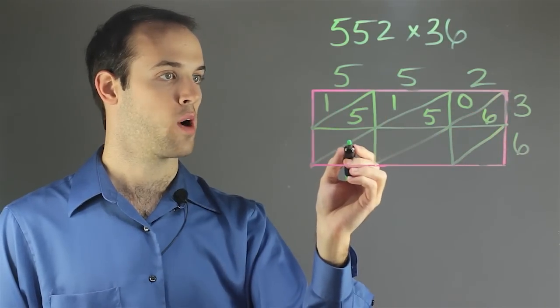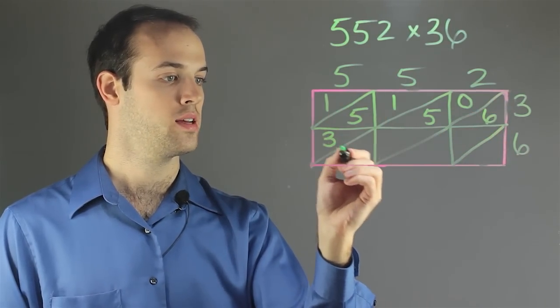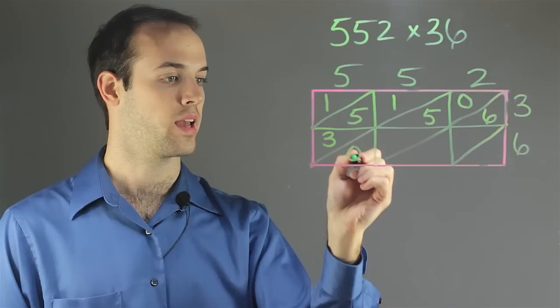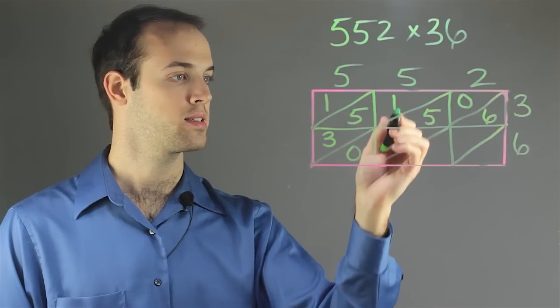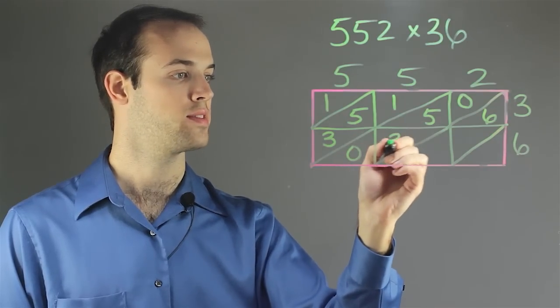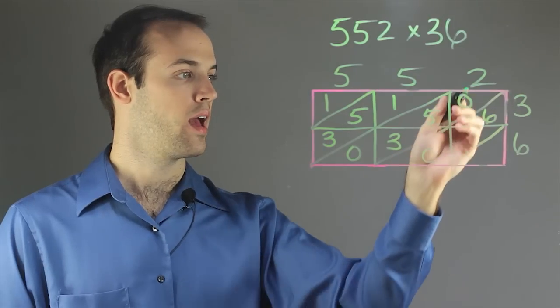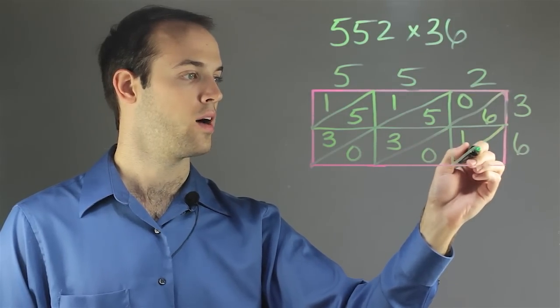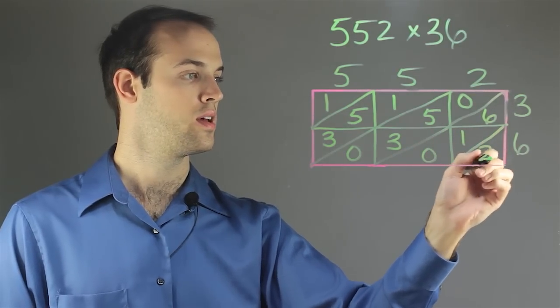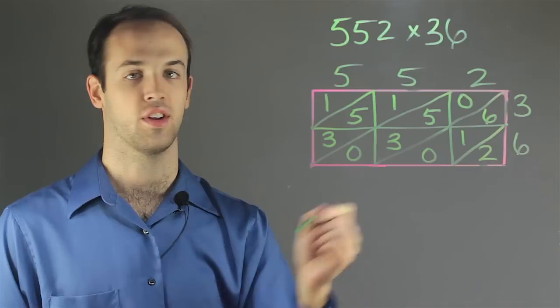Now for this row I'm going to do 5 times 6, which is 30 — a 3 in the tens place and a 0 in the ones box. Again, 5 times 6 is 30. And 2 times 6 is 12. So now we have all of our boxes filled in.